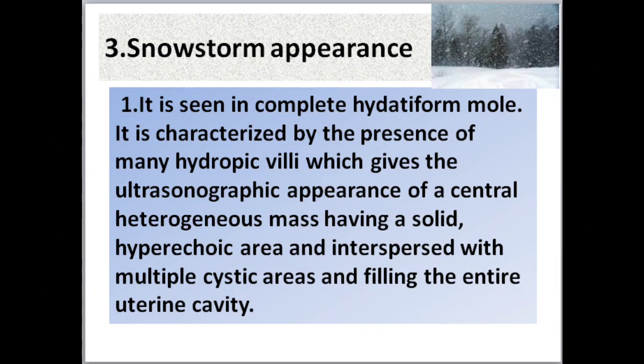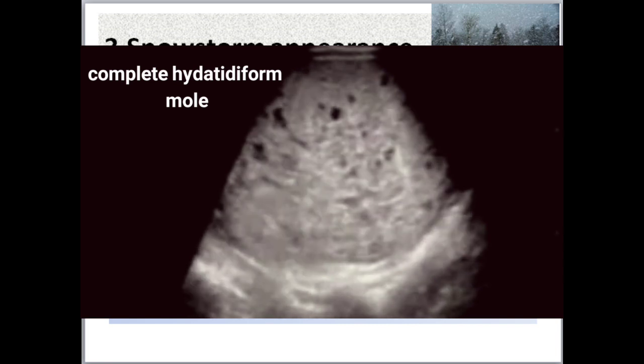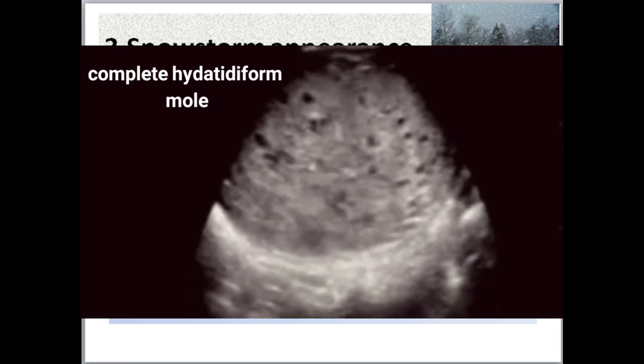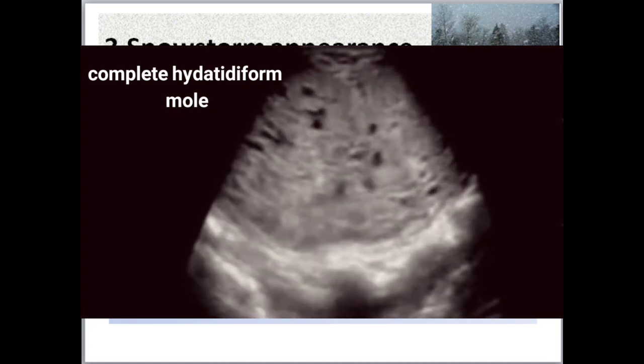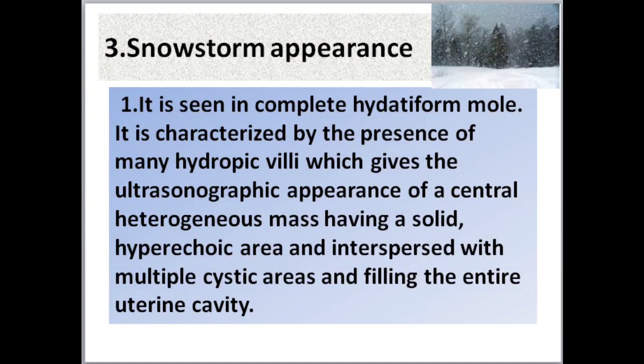The third sign is snowstorm appearance. It is seen in complete hydatidiform mole. It is characterized by the presence of many hydropic villi, which gives the ultrasonographic appearance of a central heterogeneous mass having a solid hyperechoic area interspersed with multiple cystic areas, filling the entire uterine cavity.